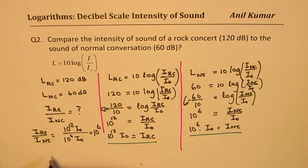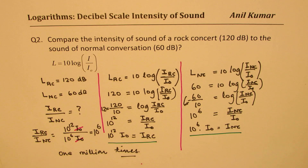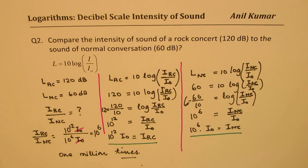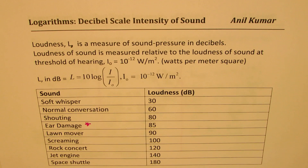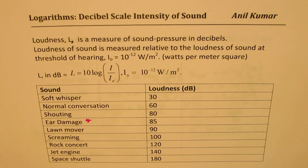So the intensity for rock concert divided by intensity for normal conversation is 10 to the power of 12 times I₀ divided by 10 to the power of 6 times I₀, which equals 10 to the power of 6 — that is 1 million times. Rock concert intensity is very, very high — 1 million times more — and extremely damaging to our ears. We really need to protect ourselves from such high levels of sound.